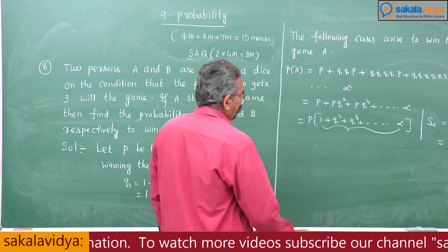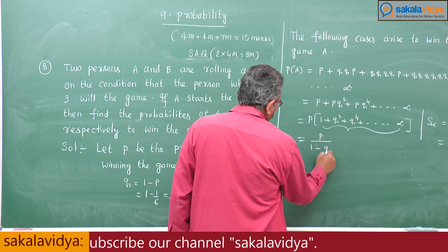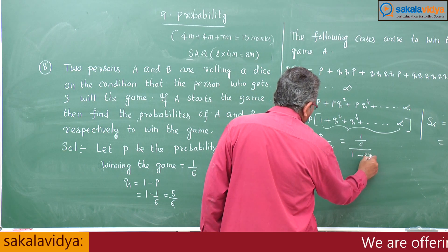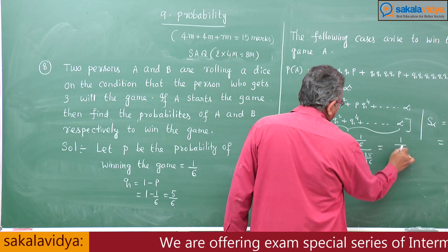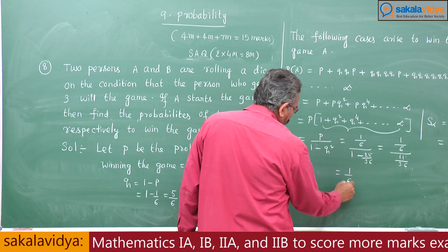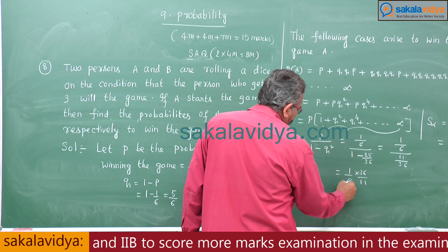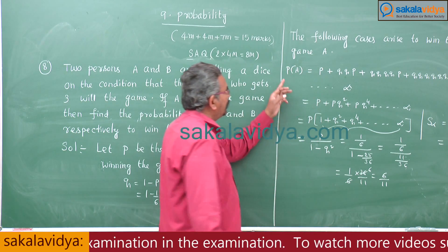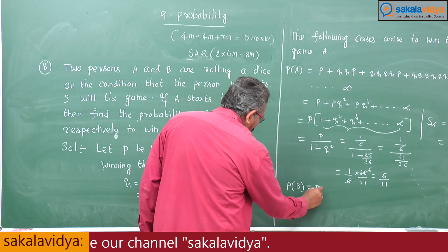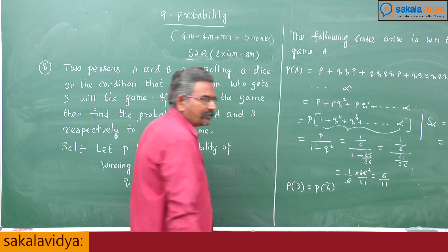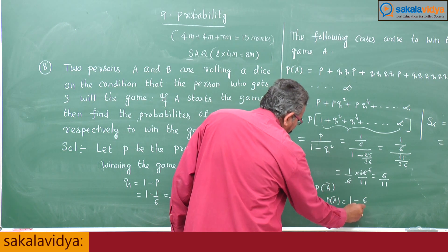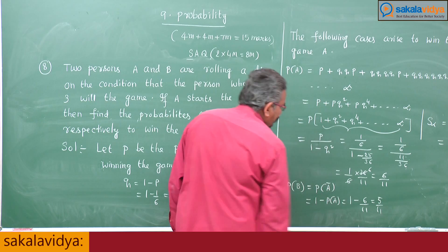Substituting P = 1/6 and Q² = 25/36: P(A) = (1/6) / (1 − 25/36) = (1/6) / (11/36) = (1/6) × (36/11) = 6/11. For B, P(B) = 1 − P(A) = 1 − 6/11 = 5/11. So A's probability of winning is 6/11 and B's is 5/11. Thank you.